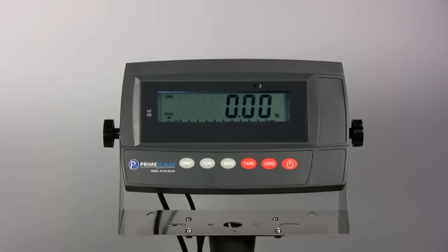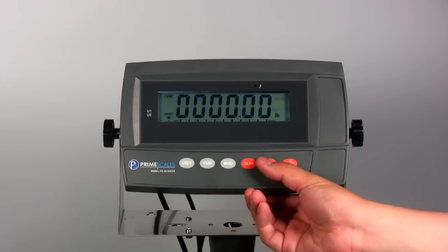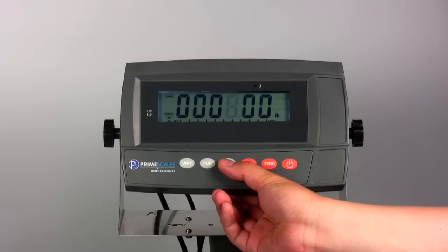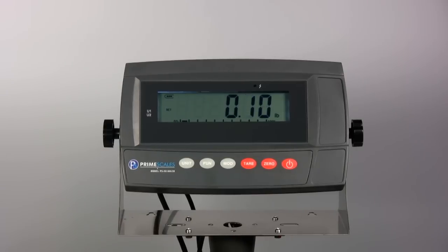Pre-tare function: If you want to tare off a known weight of the container, you can use this function. In the pre-tare mode, press MOD key to input the weight of the container, then press FUN key to confirm. Then the scale will display the net weight.